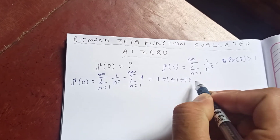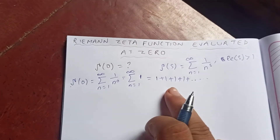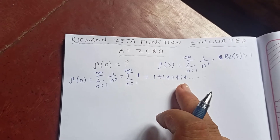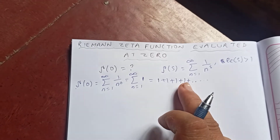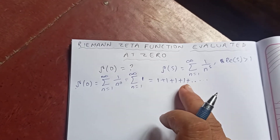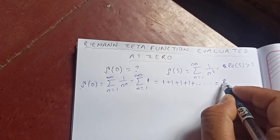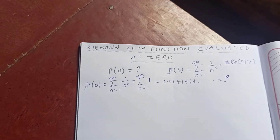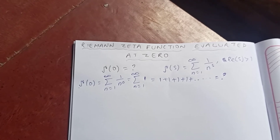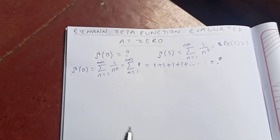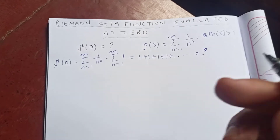If you expand this summation you get one plus one plus one plus and so on. So this is actually a divergent series again. One plus one plus one plus one — this is a divergent series. But when we deal with the zeta function at a particular value, we need another approach.